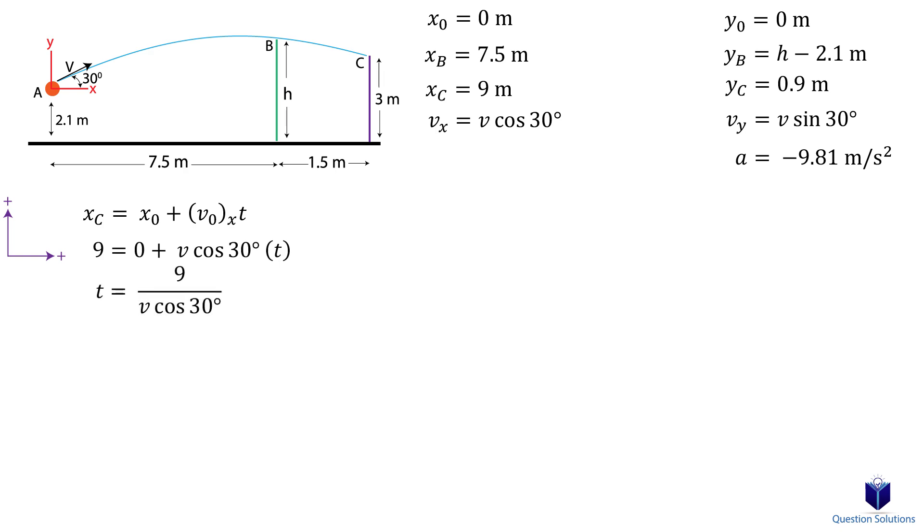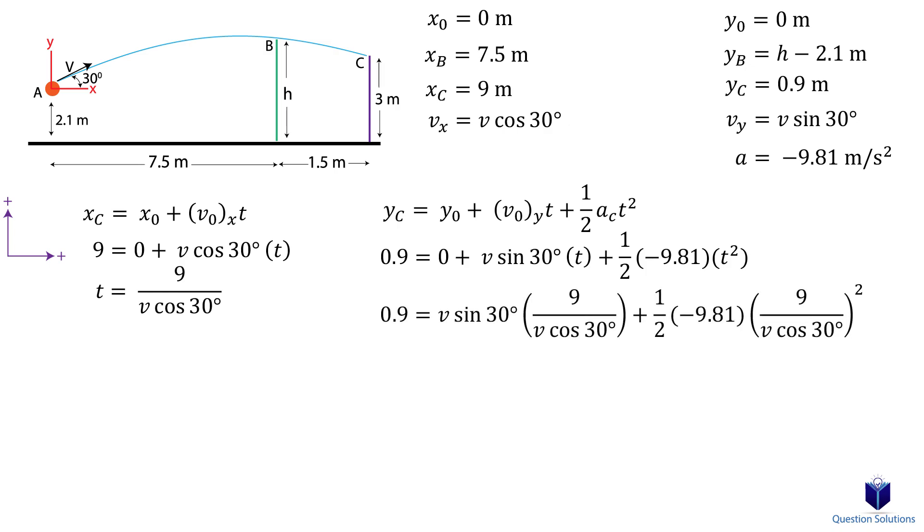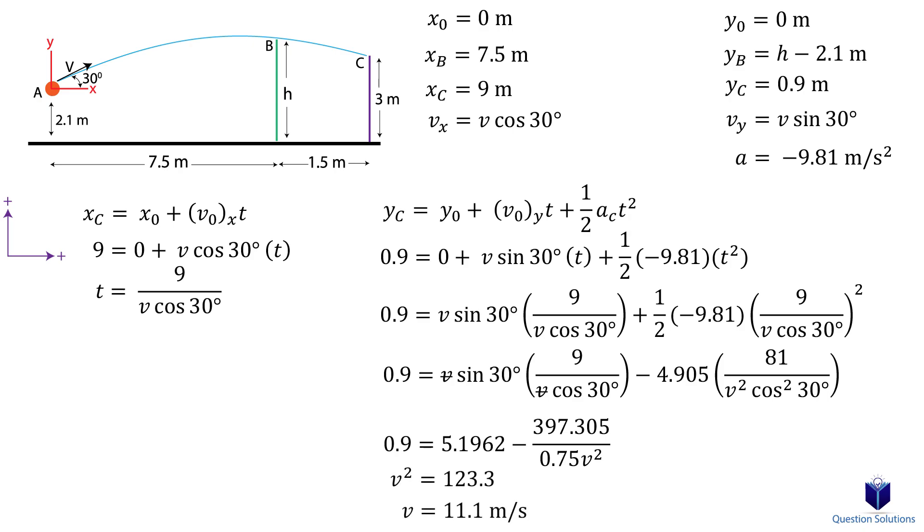Now we can write an equation for vertical motion, again focusing only at point C and the initial start of the ball. For that, we will use this equation. Let's again substitute what we know in. We now have two equations with two unknowns. We can substitute equation 1 into this equation and solve for v. We now have the initial velocity.